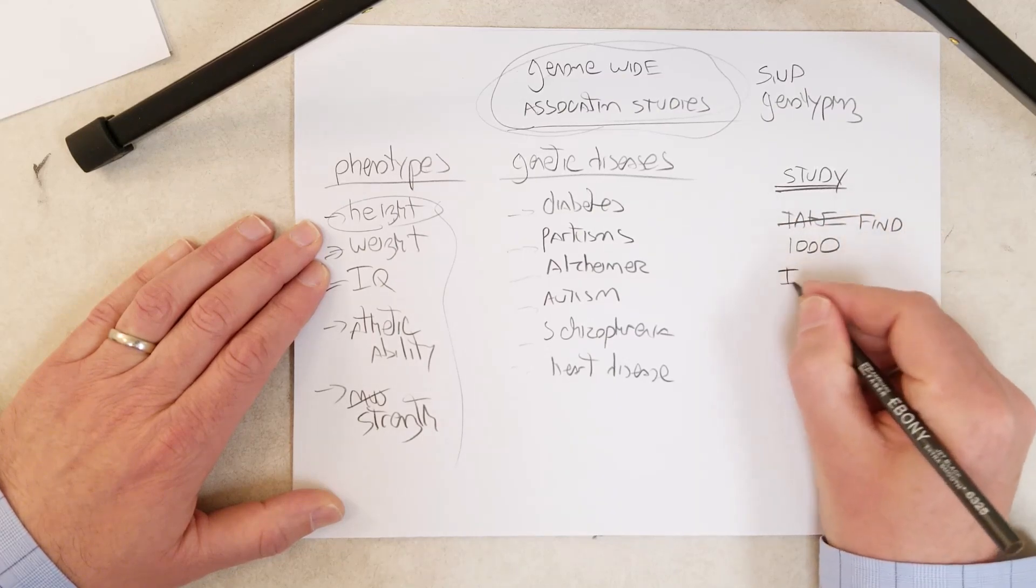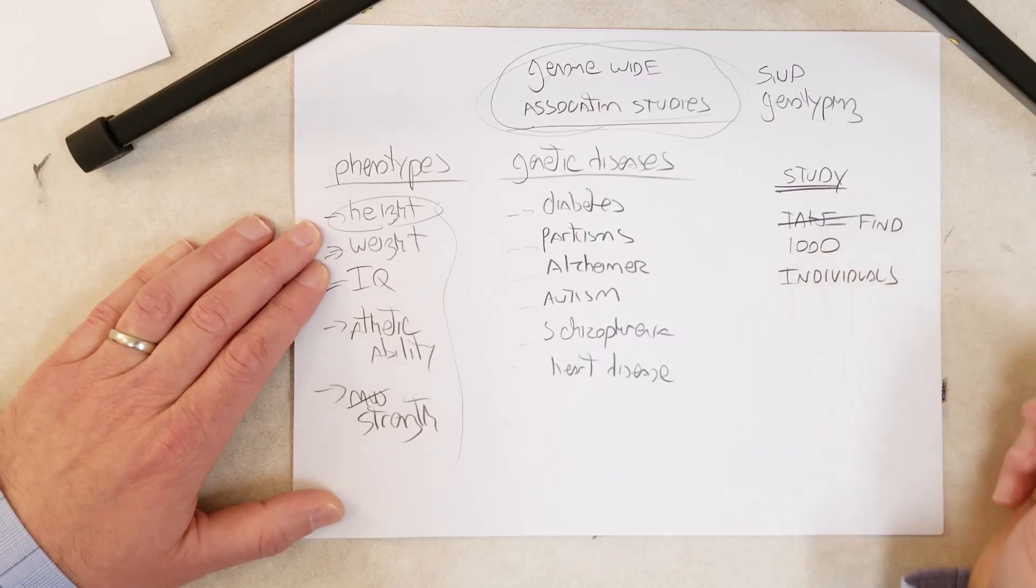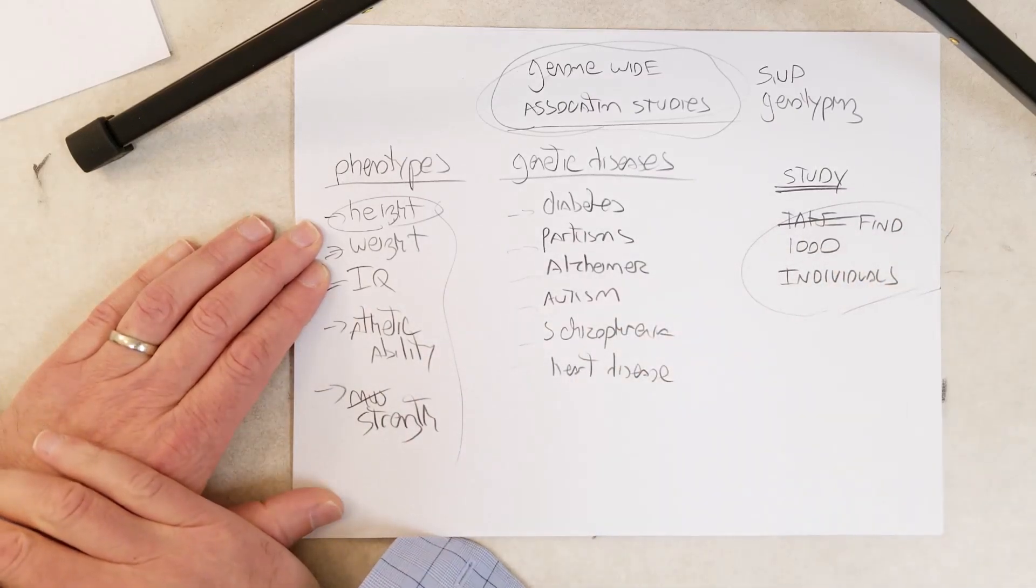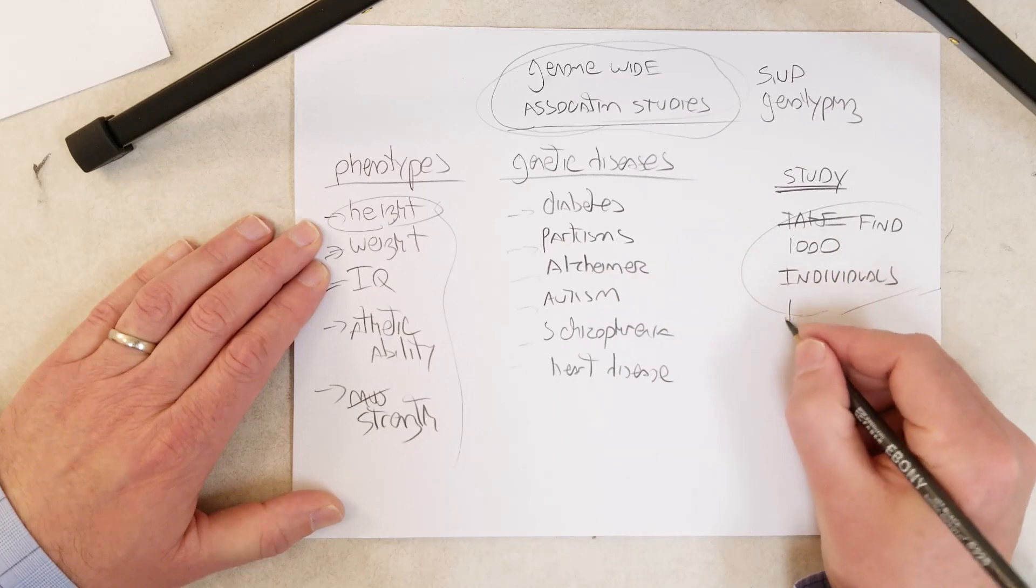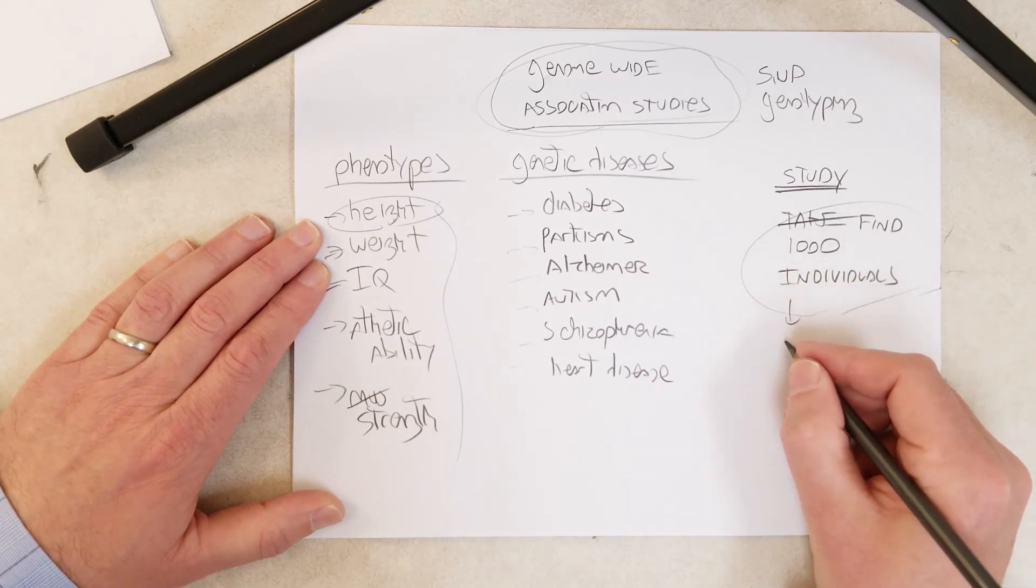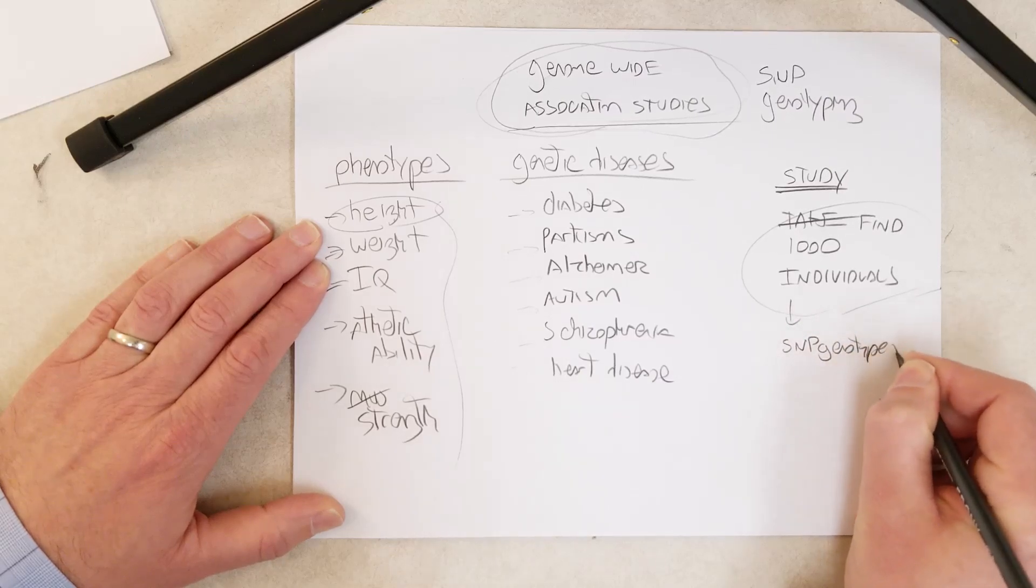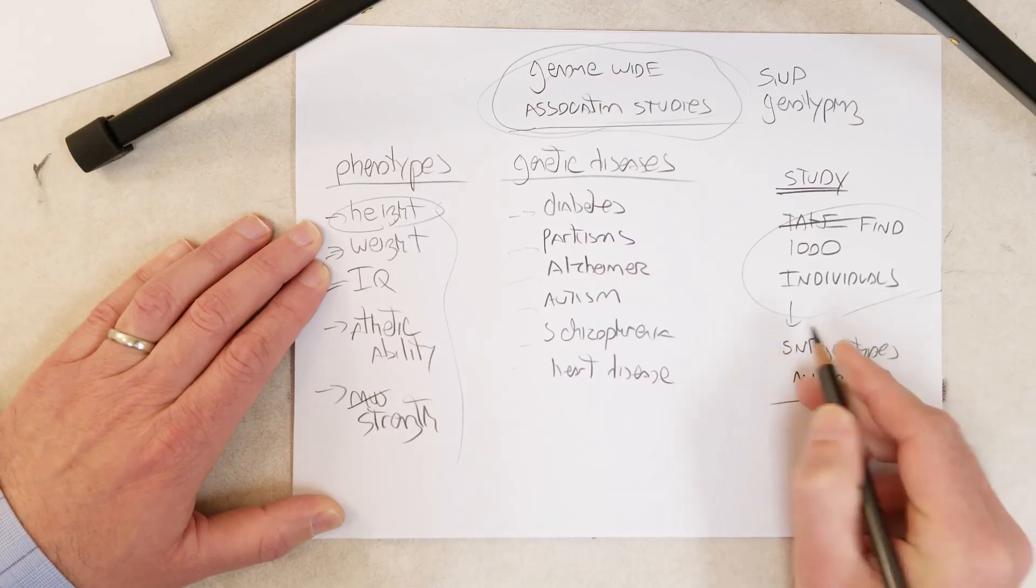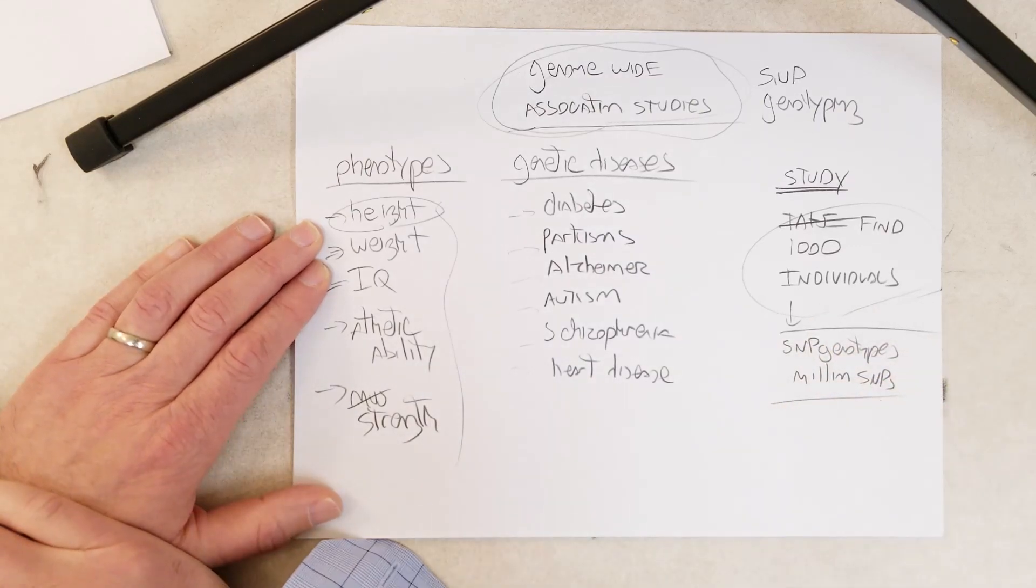1,000 individuals who are willing to participate in the study, and these 1,000 individuals should be very tall, way above average height. All we need to do is determine their SNP genotype for like a million SNPs, and this is very easy to do with the current technology that we just went over in the previous video.